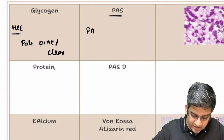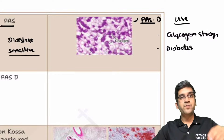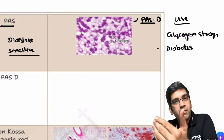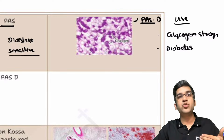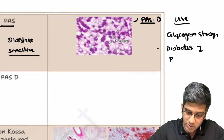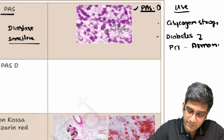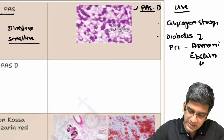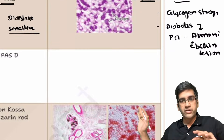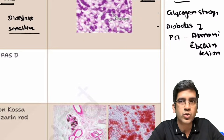Glycogen is PAS positive. You can also use PAS in diabetes — in diabetes there is glycosuria, so the proximal convoluted tubule reabsorbs glucose and stores glycogen. In the proximal convoluted tubule of diabetic kidneys you can see glycogen deposits, which is called the Armani-Epstein lesion. We will read about Armani-Epstein lesion and diabetic changes in the kidney when we reach renal pathology.